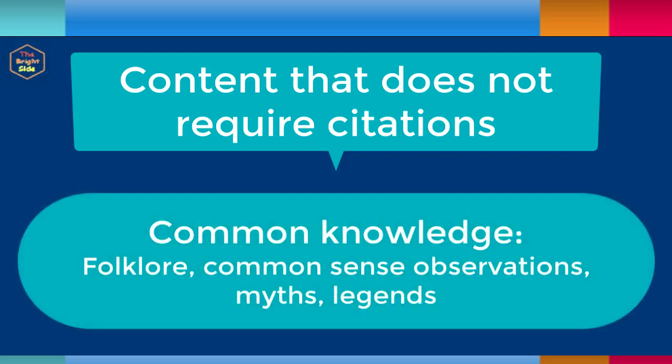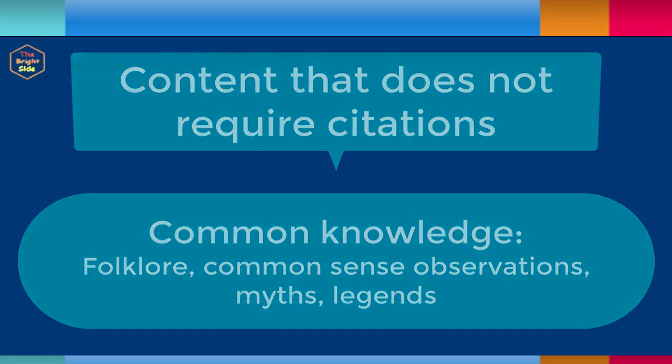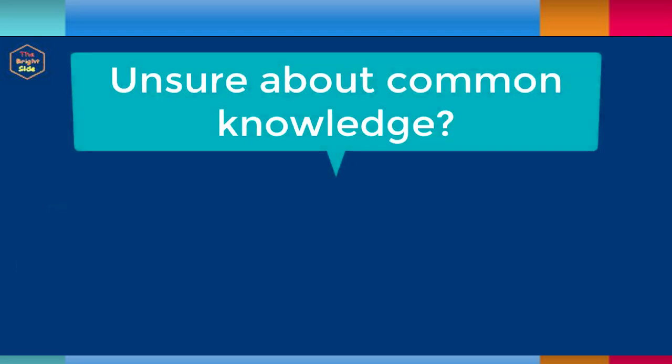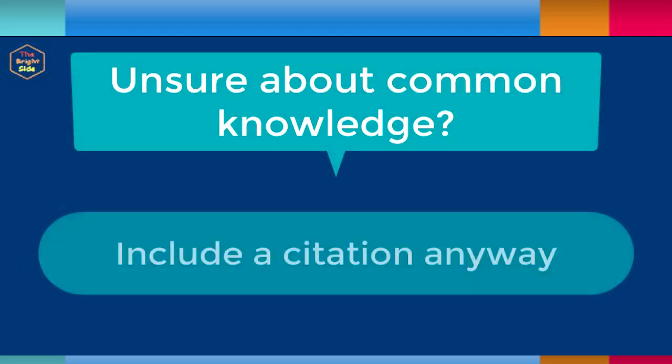Using generally accepted facts, such as stating pollution is bad for the environment, and when you are using common knowledge such as folklore, common sense observations, myths, and legends. If you're not sure if something is common knowledge or not, you should use a citation anyway, even if it turns out to be unnecessary.